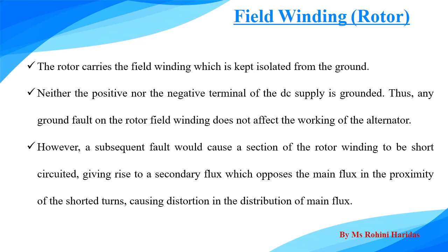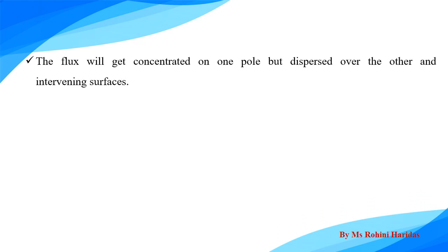However, a subsequent fault would cause a section of the rotor winding to be short-circuited, giving rise to a secondary flux which opposes the main flux in the proximity of the shortened turns. It will cause the distortion of the distribution of the main flux.